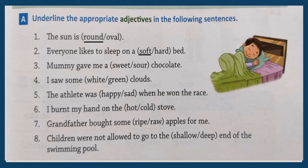Number three: Mummy gave me a sweet or sour chocolate. Now what kind of chocolate do you like? Sweet, isn't it? So let's underline sweet. Number four: I saw some white or green clouds. Now what kind of clouds did you see? Can it be green clouds? No. So white clouds — underline white.